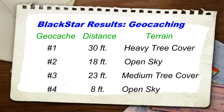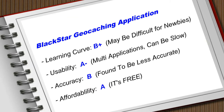Let's go over how the BlackStar application did today. The first three geocaches we did out in the field: the first one was 30 feet off, 18 feet off, and 23 feet off consecutively. The fourth one was a manual test that I did in an open field and was only 8 feet off. So let's give BlackStar its scorecard.